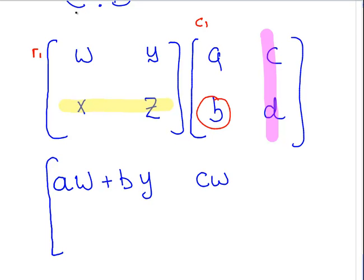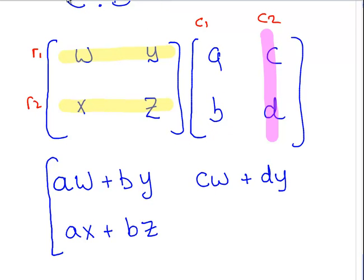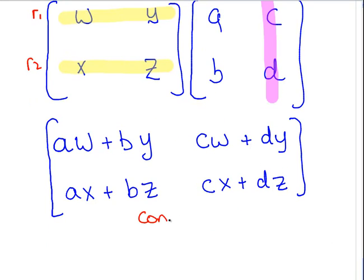So CW, again, the top row by the second column there. CW, the first element of the row 1 and column 2, and the second elements are D and Y. So I multiply them out. Now we're going here to row 2 and column 1 is A times X plus B times Z. And then C times X plus D times Z. So that's our conclusion from the right-hand side.